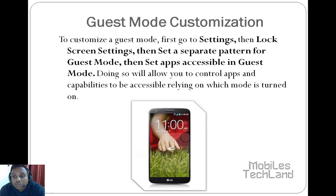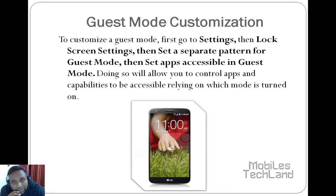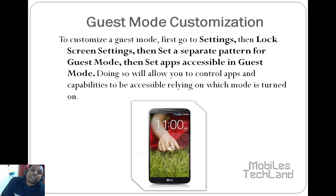Doing so will allow you to control apps and capabilities to be accessible, depending on which mode is turned on. If your guest mode is turned on and you give your phone to your younger brother, a friend, or someone who might play a prank on you, you can customize what apps or features are available. For example, you can disable your gallery or videos so that the guest doesn't get access to them.